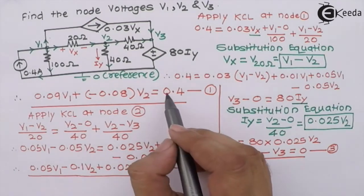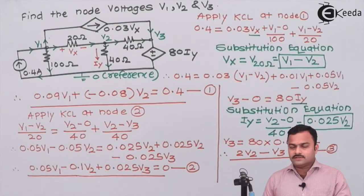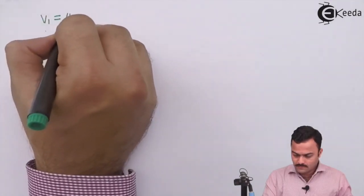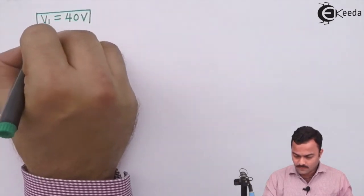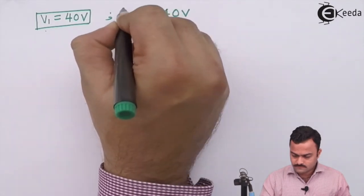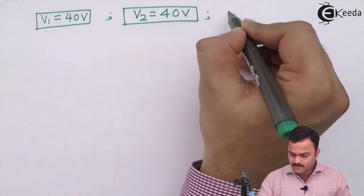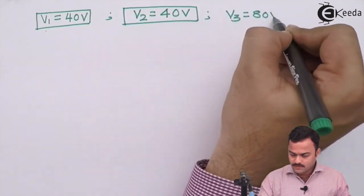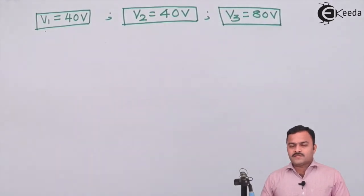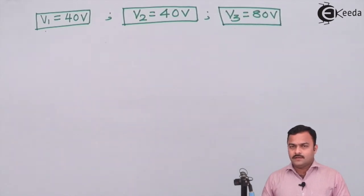So we have three nodes and three equations. Upon solving all three equations, we get the values of V1, V2, and V3. V2 is 40 volts. In conclusion, even if more than one dependent source is present, the concept remains the same. The only thing is that while marking the branch current, we need to be very, very careful whenever dependent sources are present in nodal analysis.